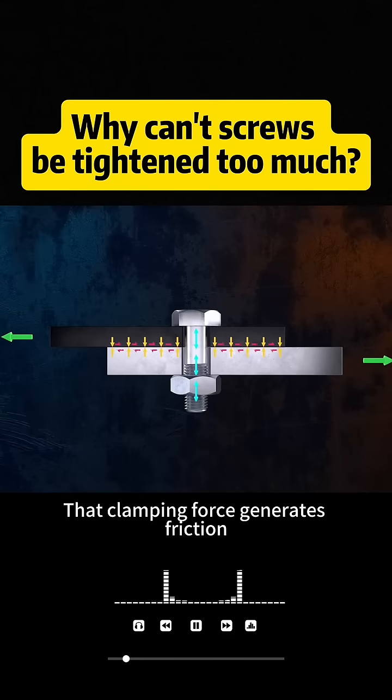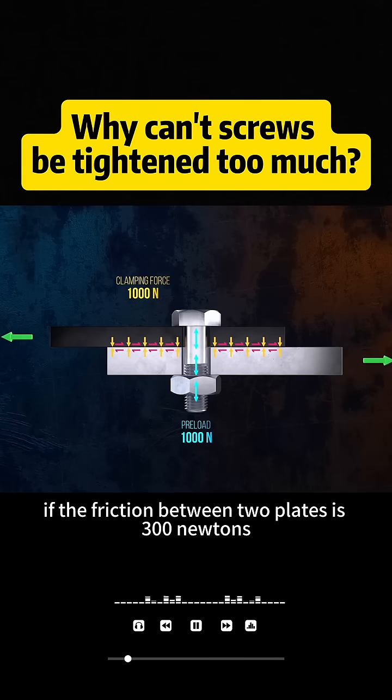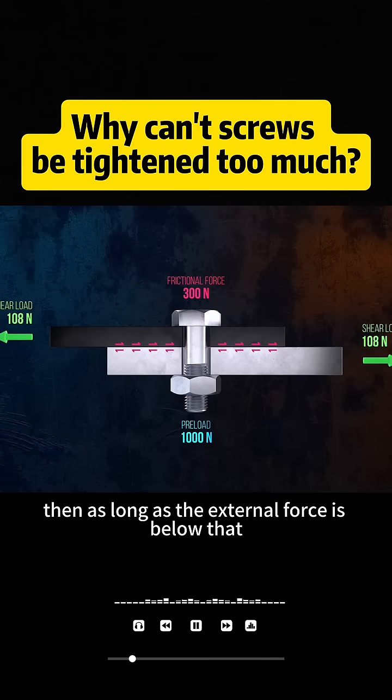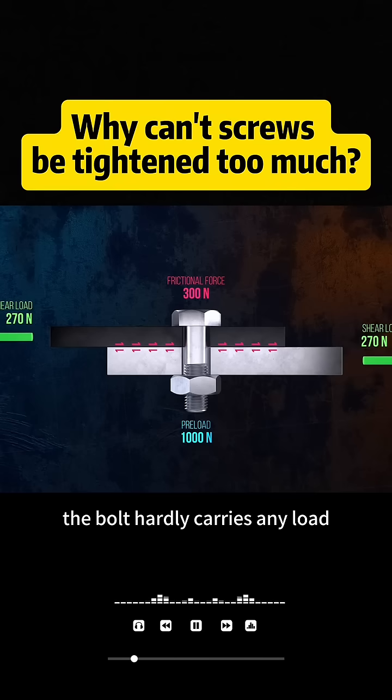That clamping force generates friction. For example, if the friction between two plates is 300 newtons, then as long as the external force is below that, the bolt hardly carries any load.